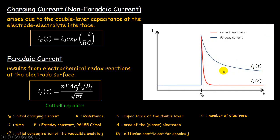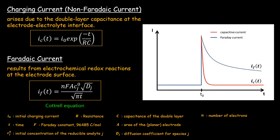If I measure the current somewhere early, I can see a significant contribution of the capacitive current still remains. But if I can make a provision to allow some time for the capacitive current to decay down and then do the measurement — operating somewhere in a later zone — you can see that the capacitive contribution of the current is very small, and the current which is actually coming is due to the Faradaic current. This is what DPV does: we allow some time so that the capacitive current decays almost to zero, and then we measure only the Faradaic current.